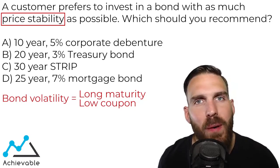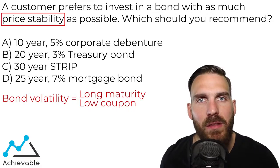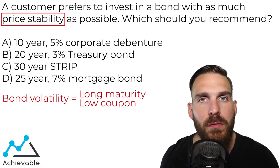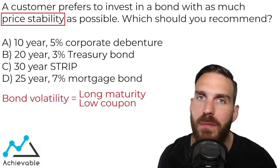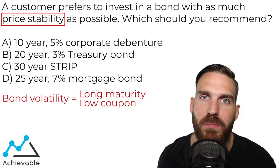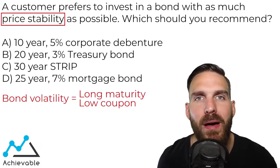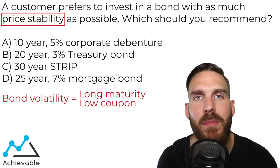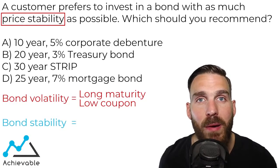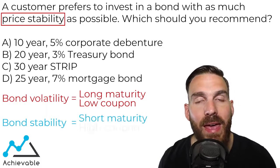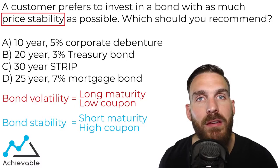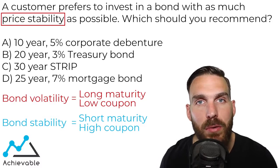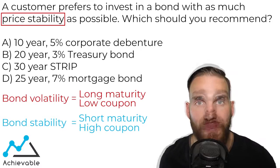So, if bond volatility is related to long-term maturities and low coupons, then stability must be the exact opposite. The bond exhibiting the most price stability will be one with a short-term maturity and a high coupon, and the bond that exhibits those characteristics the most will be the right answer.